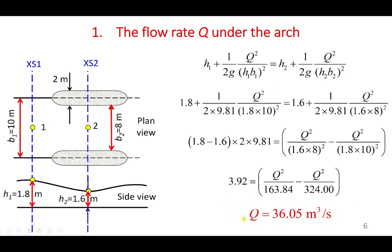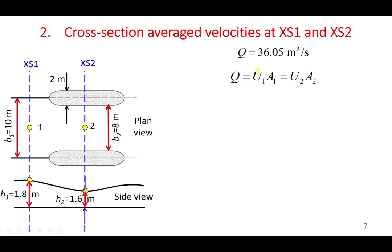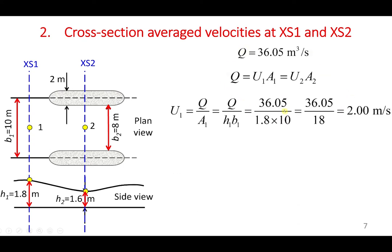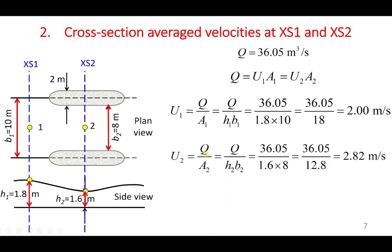Now using the flow rate we just obtained and the continuity equation, we can determine velocities at cross-section 1 and cross-section 2. By rearranging the continuity equation, u1 equals 2 meters per second and u2 equals 2.82 meters per second. Since the flow rate is constant, the higher velocity at cross-section 2 implies that the cross-sectional area at cross-section 2 is smaller than at cross-section 1.